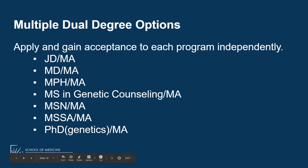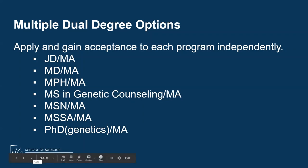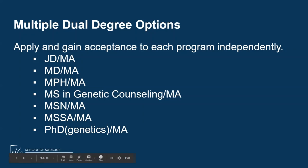We offer multiple dual degree options. You would need to apply to each of the programs individually to be accepted to a dual degree. Some students arrive on campus and then realize they want to do a dual degree — with many of the options, it is possible to apply in the fall for a January start. The benefit is usually a savings in money and being able to double count a limited number of credits, so it actually accelerates your accomplishment of both degrees.